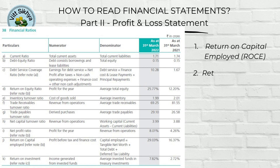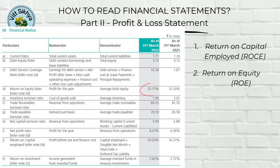Return on equity or ROE tells you how much profit a company is making for every rupee of shareholders' equity. A higher ROE means the company is more profitable, while a lower ROE means it is less profitable. Titan Limited has a ROE of 25.77%. According to the latest data from the Center for Research in Security Prices or CRSP, the average ROE for the Indian watch and jewelry industry is 14.5%. This means that Titan Limited is generating significantly more profit from its shareholders' equity than the average company in its industry.